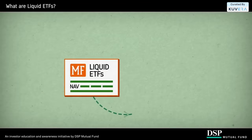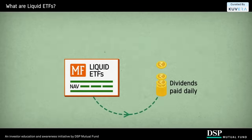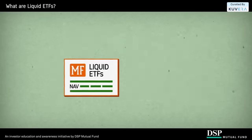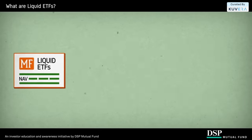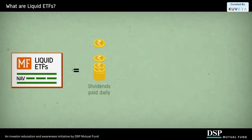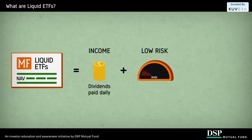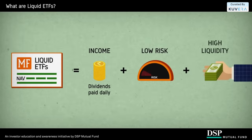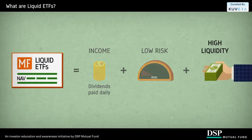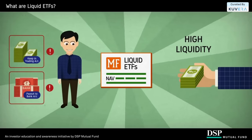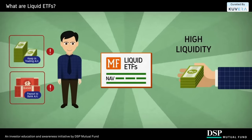Liquid ETFs generally pay dividends on a daily basis, which are then reinvested into the fund. The aim of a liquid ETF is usually to provide an income commensurate with low risk, while at the same time providing a high level of liquidity. It is this high liquidity which makes liquid ETFs the perfect solution to your conundrum.